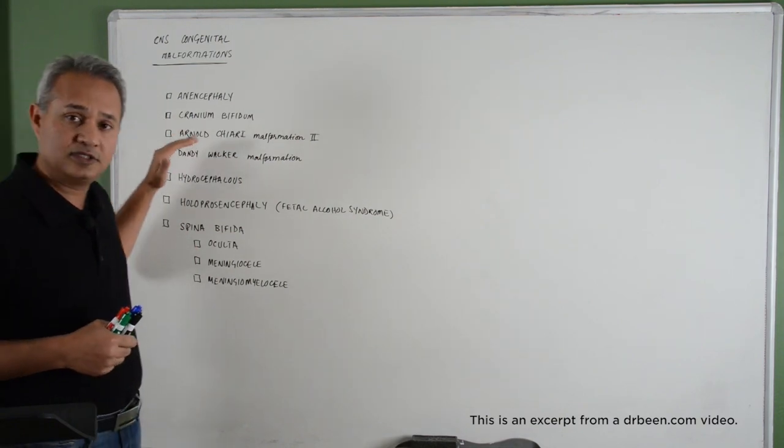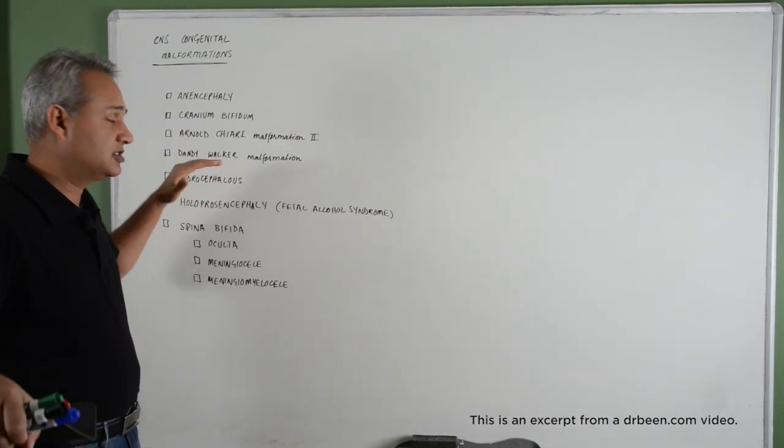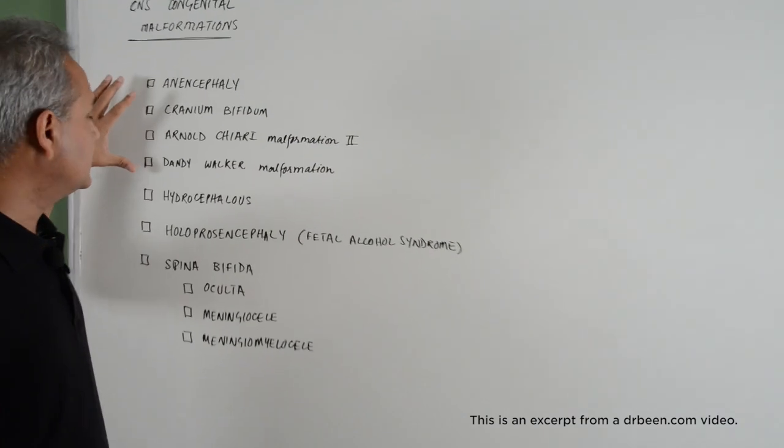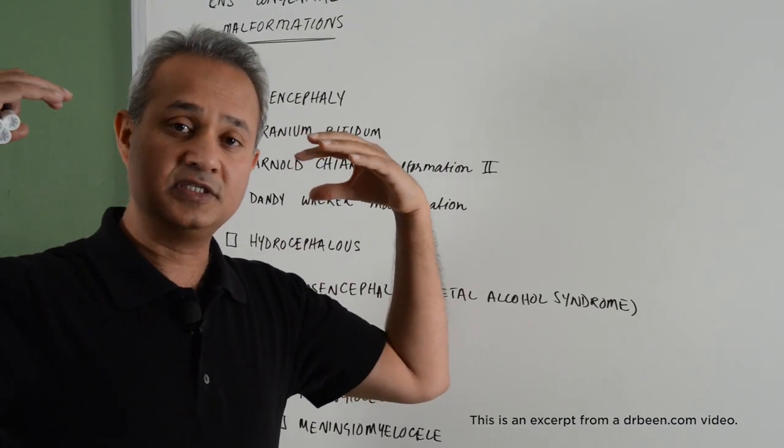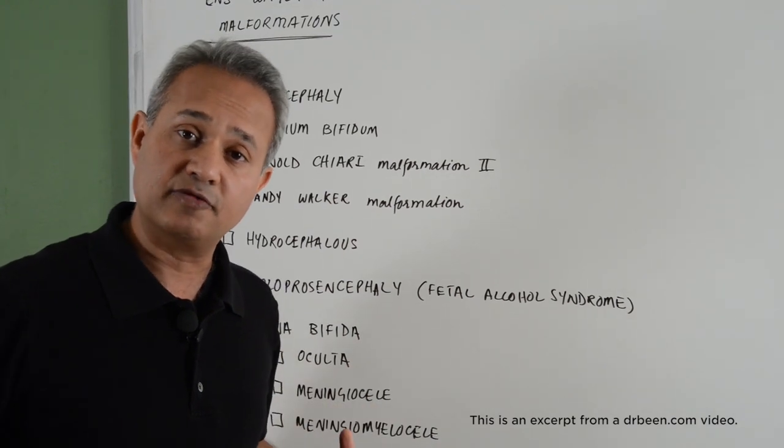The way to look at the pathologies or congenital malformations is: separate these out into cranial region malformations and then spinal region malformations.